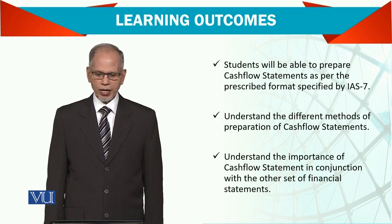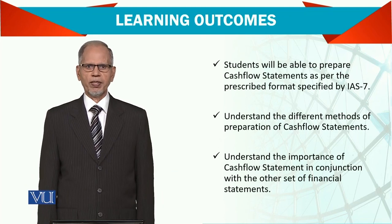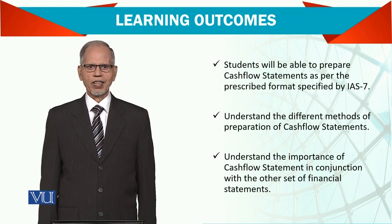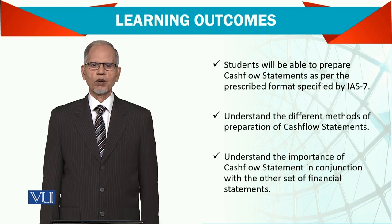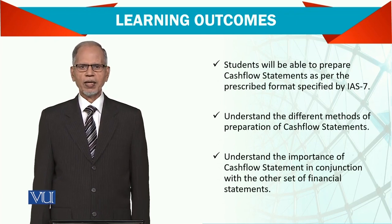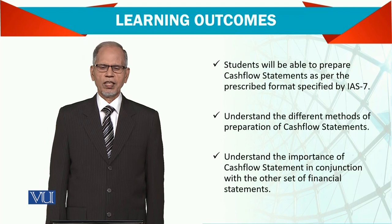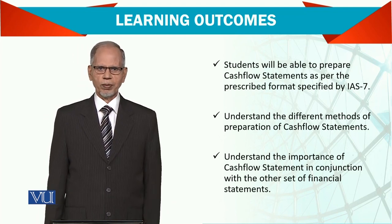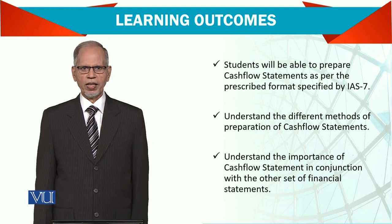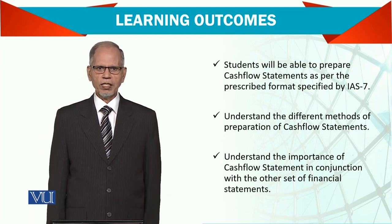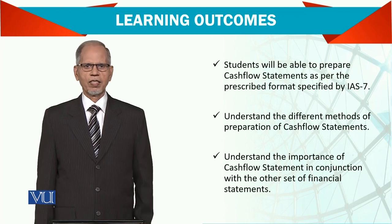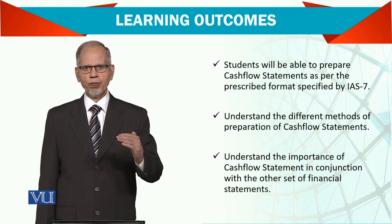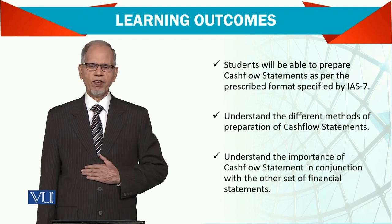There are two different methods of preparing cash flow statements. Number one is called the direct method and the other is called the indirect method. In the direct method, we start with cash from operating activities — collection from customers, payment to suppliers, payment for expenses, payment for taxes, payment for interest, and so on. This is directly related to payments for these items.